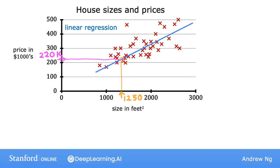So this is an example of what's called a supervised learning model. We call this supervised learning because you are first training your model by giving it data that has the right answers. Because you give the model examples of houses with both the size of the house as well as the price that the model should predict for each house, where the prices are the right answers given for every house in the dataset.